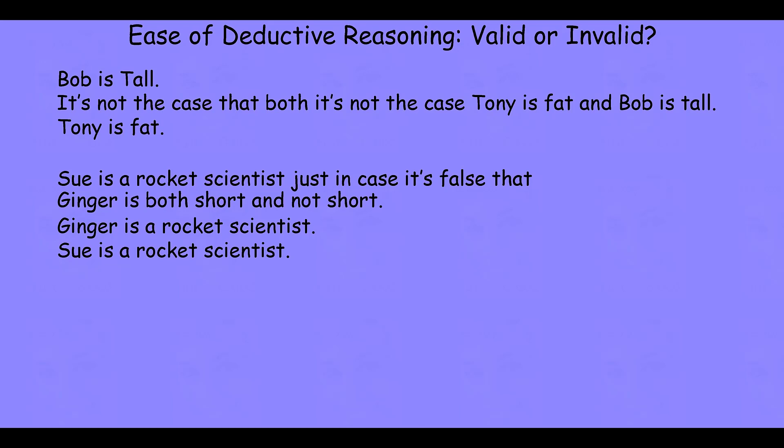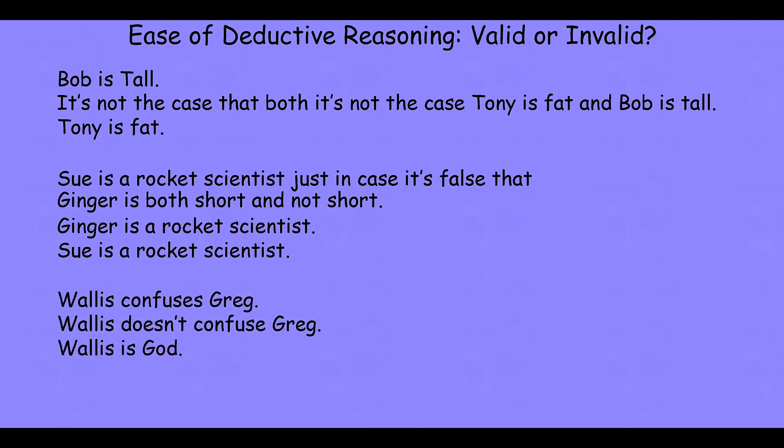Finally, let's look at one more. Premise: Wallace confuses Greg. Premise: Wallace doesn't confuse Greg. Conclusion: Wallace is God. You probably don't even need to stop the video to come to an intuitive judgment about this argument. You'll look at it and think the conclusion is beyond false — it's absurd. So clearly, this is a terrible argument.